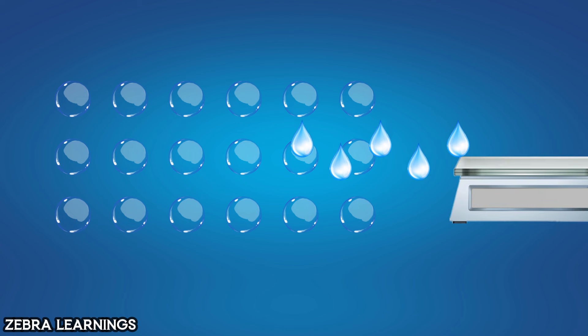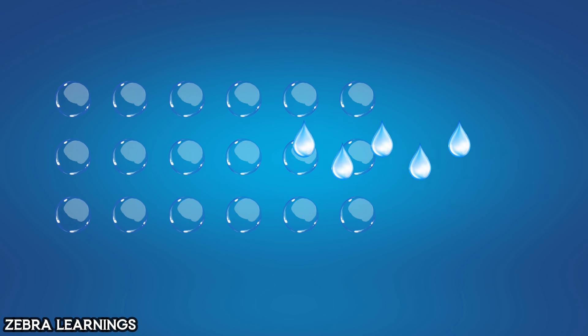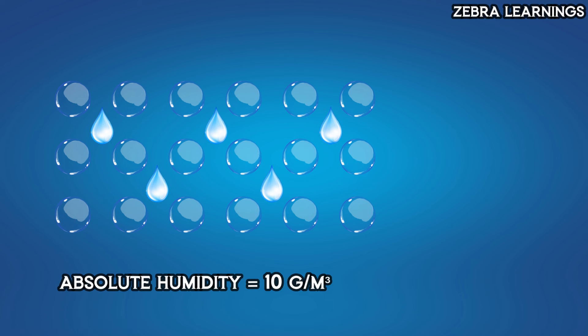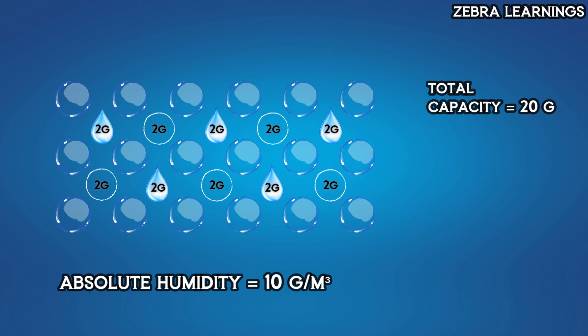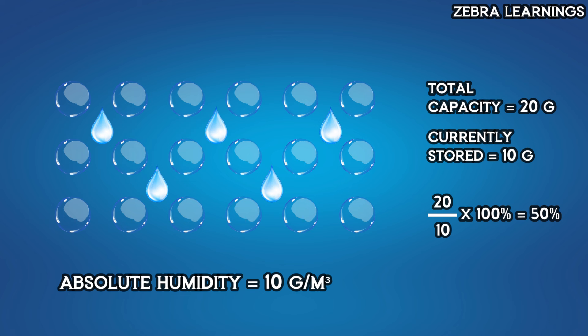Let's say there are 10 grams of water vapor in this 1 cubic meter area. Its absolute humidity value is 10 grams per cubic meter. But this area has the capacity to store up to 20 grams of water vapor. However, there are only 10 grams of water vapor present at the moment. That means 50% of the water vapor capacity is filled in this area. This value, measured as a percentage, is the relative humidity.